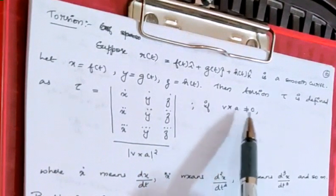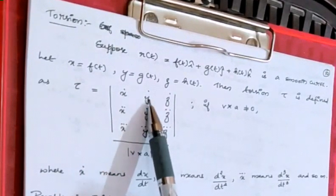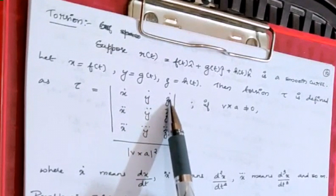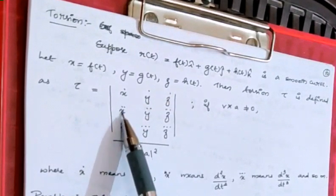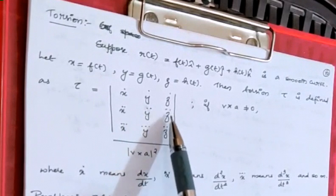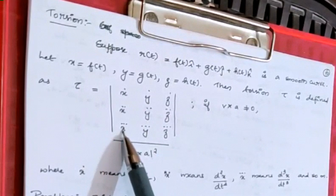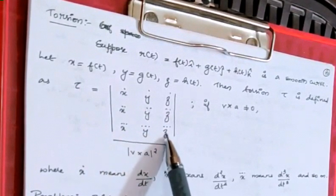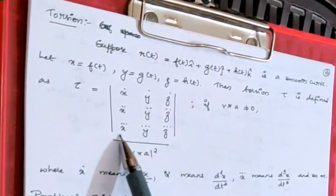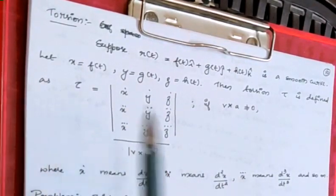if v × a ≠ 0. Here x̊ means the derivative of x, that is dx/dt; ẙ is dy/dt; ż is dz/dt; ẍ is d²x/dt²; ÿ is d²y/dt²; z̈ is d²z/dt²; whereas x⃛, y⃛, and z⃛ are the third derivatives respectively. So this is an easier form to find τ.